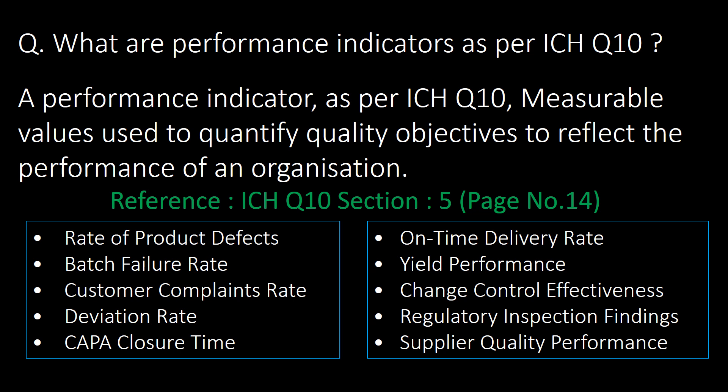This is a very important question: what are performance indicators as per ICH Q10? A performance indicator is a measurable value used to quantify quality objectives to reflect the performance of an organization. Some important performance indicators in the pharma industry are: rate of product defects, batch failure rate, customer complaints rate, deviation rate, CAPA closure time, on-time delivery rate, yield performance, change control effectiveness, regulatory inspection findings, and supplier quality performance.